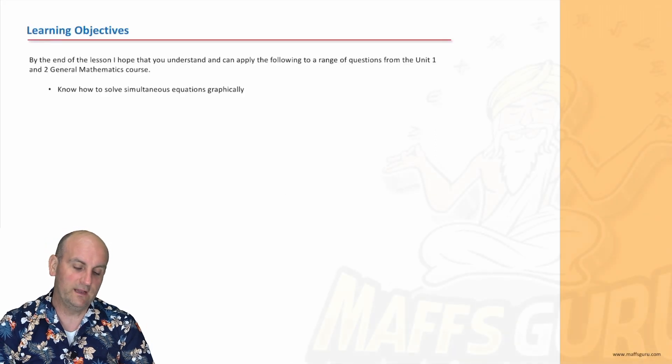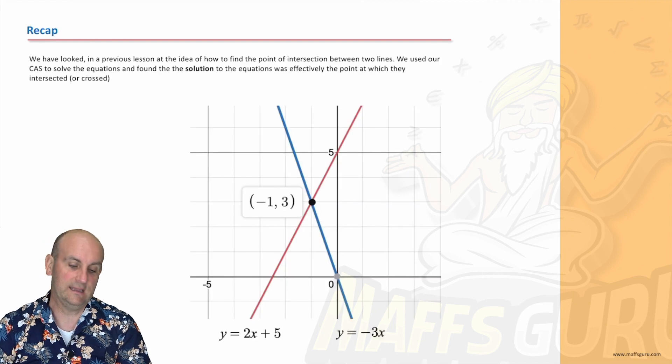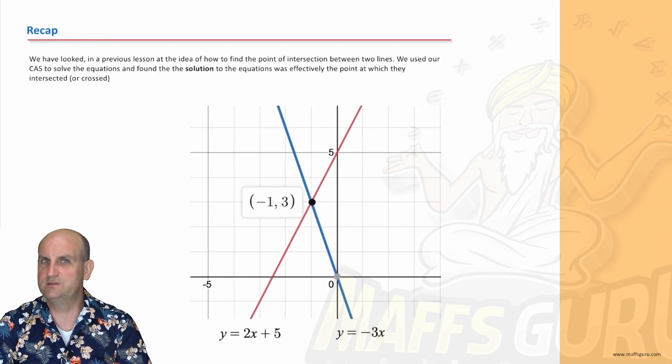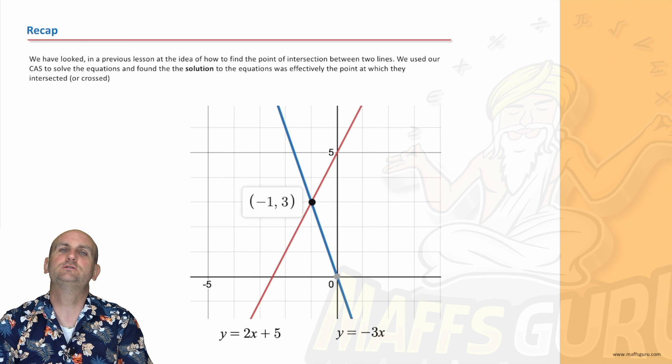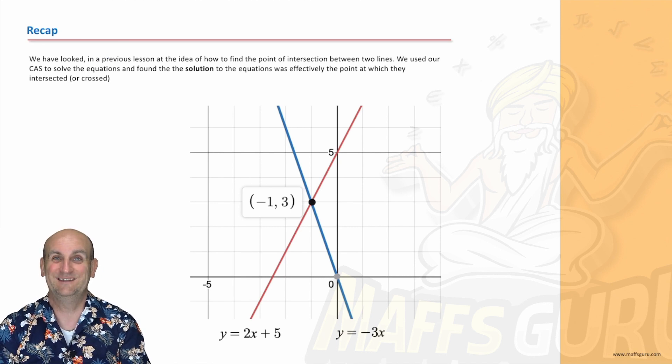So what we're going to do today is learn how to solve simultaneous equations using our CAS calculator. What is a simultaneous equation? It is two straight lines that effectively cross at a point of intersection.